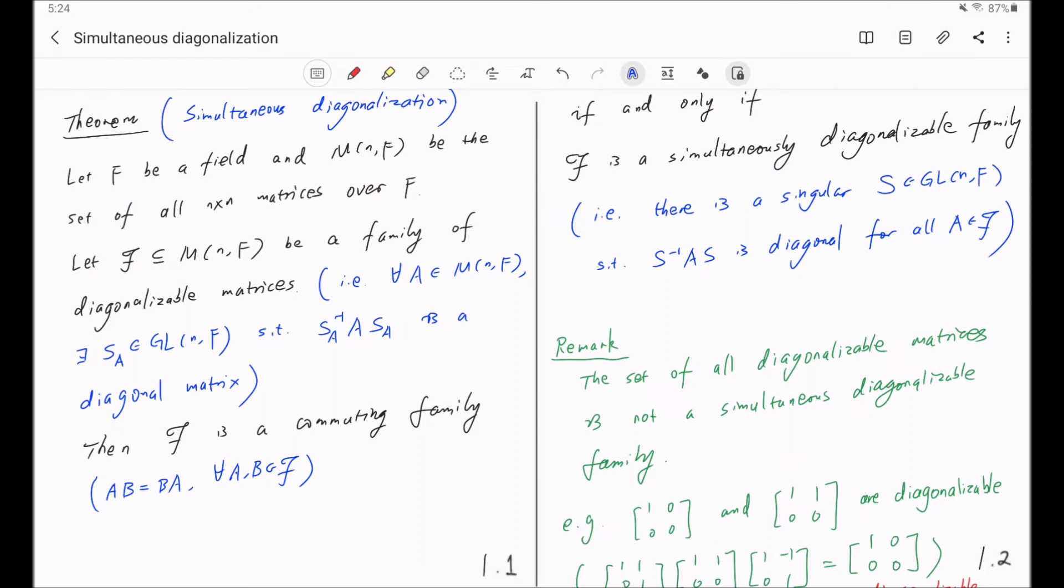So this remark tells us that a simultaneous diagonalizable family must be a proper subset of the set of all diagonalizable matrices.